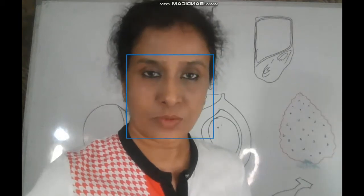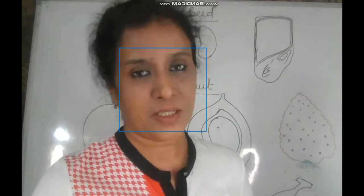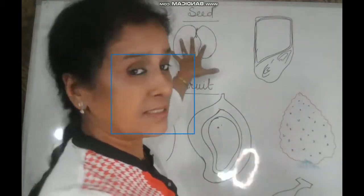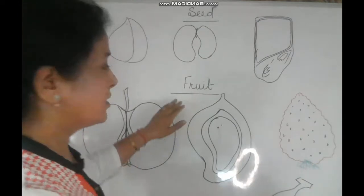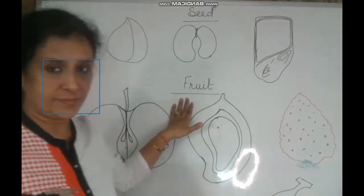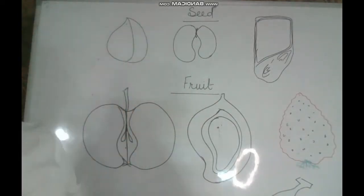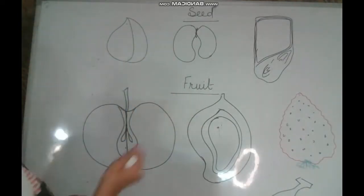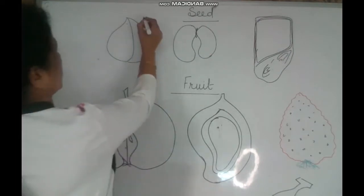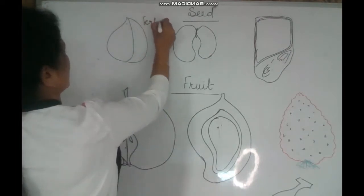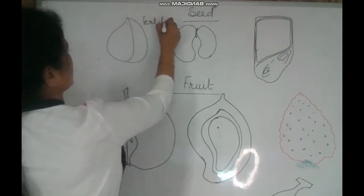Now let us move to the next part of the chapter, that is seed and fruit. What is seed? A fertilized ovule develops into a seed.